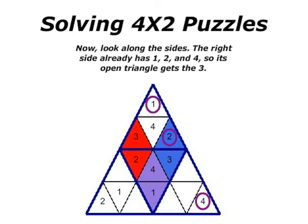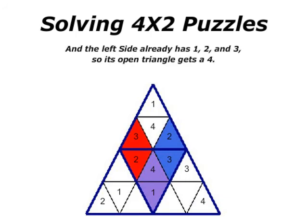Now, looking at the sides. The right side already has 1, 2, and 4, so its open triangle gets the 3. And the left side already has 1, 2, and 3, so its open triangle gets a 4.